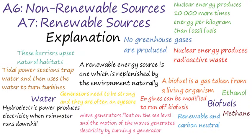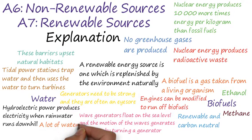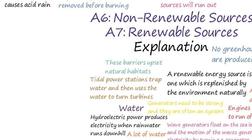Hydroelectric power produces electricity when rainwater reservoirs and storage schemes let water they've collected run downhill, turning turbines and generating electricity. A lot of water is needed to produce sufficient energy, and often reservoirs can become dry as well.